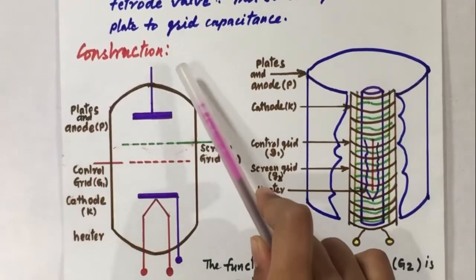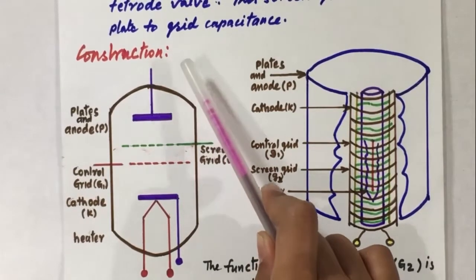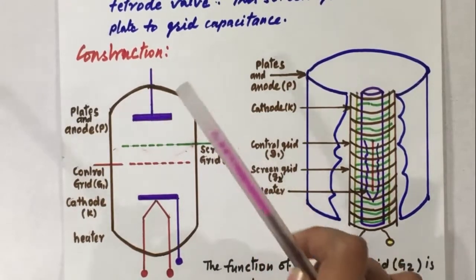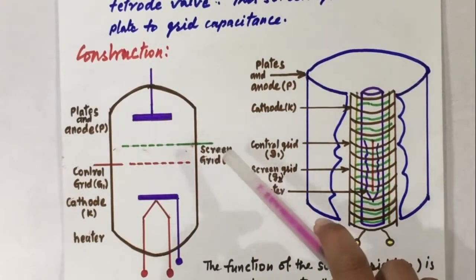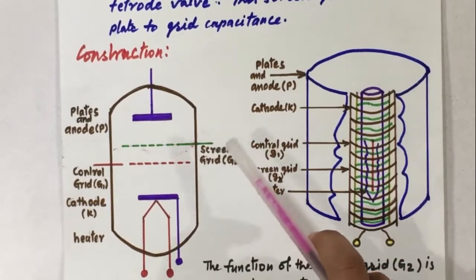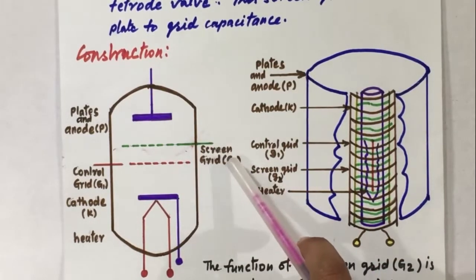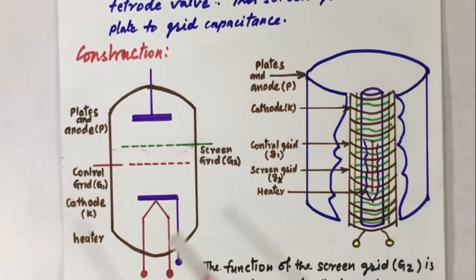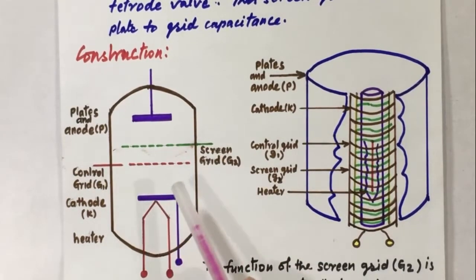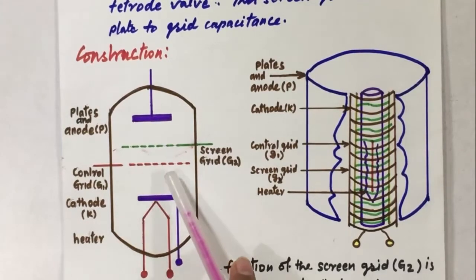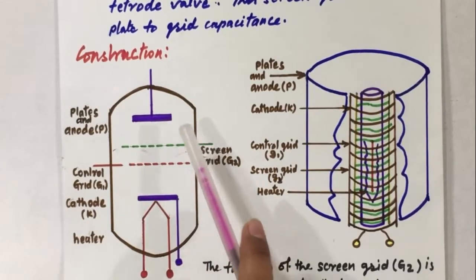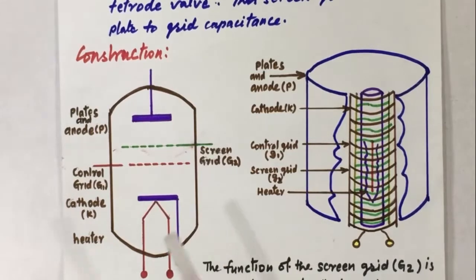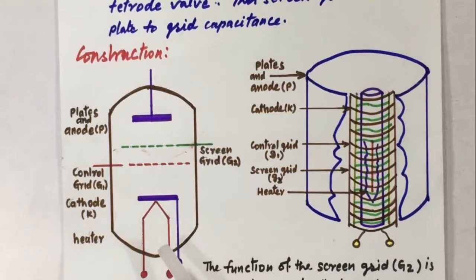Now we will see the construction of the tetrode valve. In the triode valve, there is no screen grid. But in the tetrode valve, we introduce the screen grid between the control grid and the anode. We can see there are four electrodes: firstly cathode, then control grid, then screen grid and then anode. The cathode is heated indirectly by the filament.